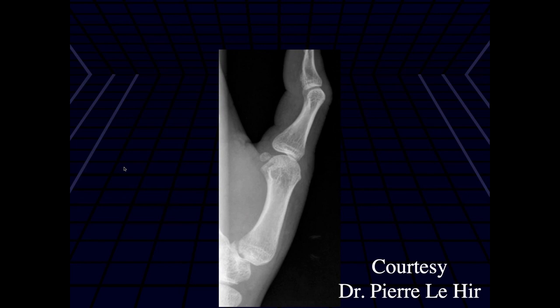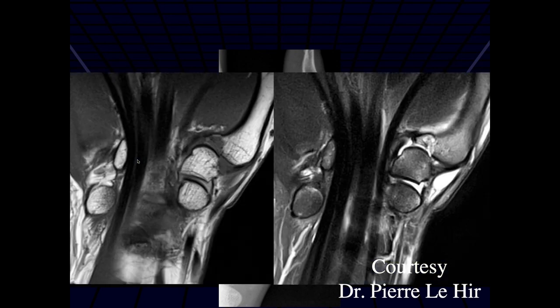We just have a single image of the thumb, but it looks like there may be some cortical irregularity along the ulnar aspect of the base of the thumb metacarpal. So I think this is a mildly displaced ossific avulsion injury fracture.